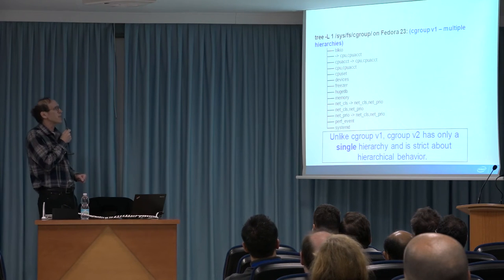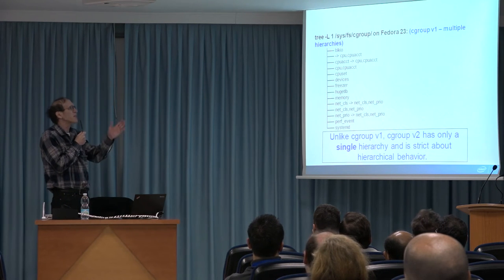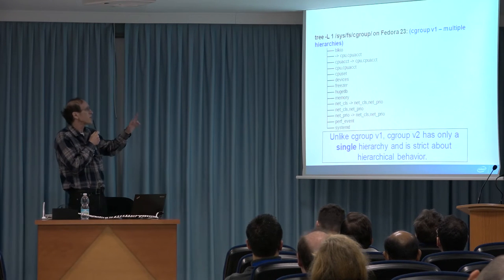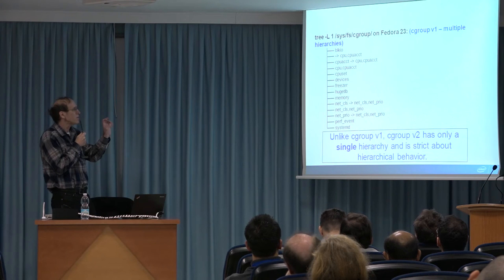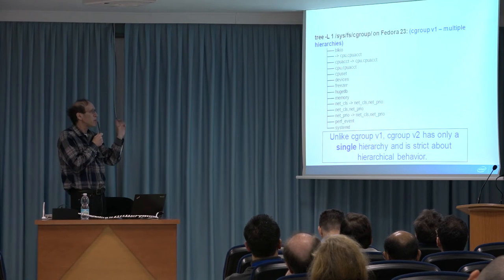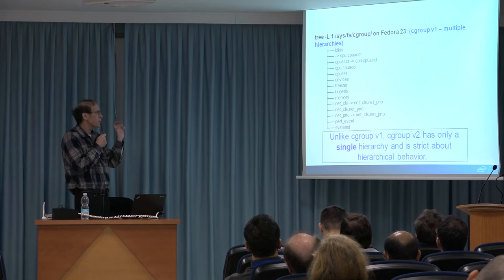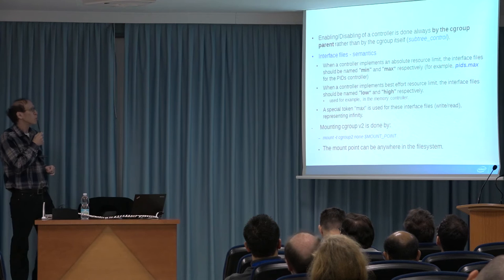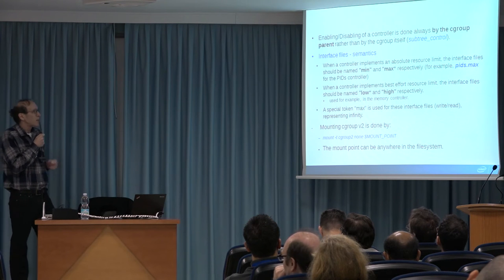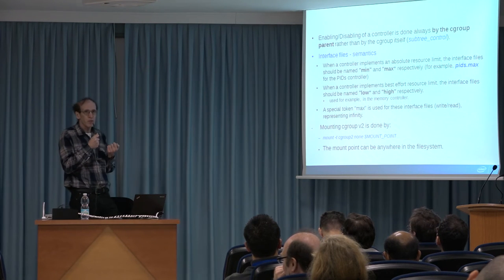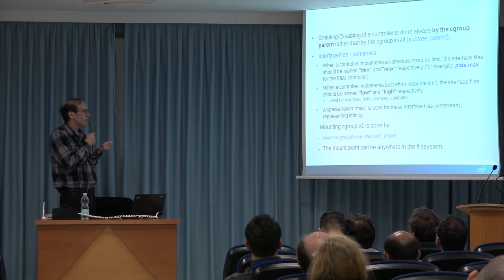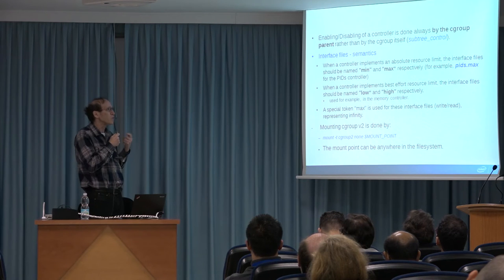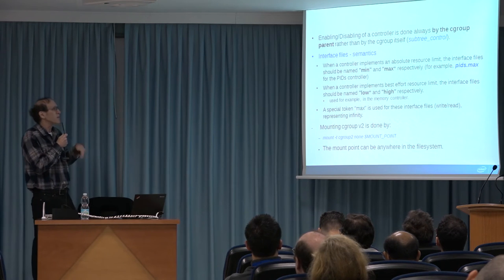For example, in Fedora 23, the Cgroup controllers used are Cgroup V1, and we can see that apart from two cases, every controller is mounted separately on a different path. Again, in Cgroup V2 we have only one root object. The Cgroup V2 enforces strict rules about semantics of interface files, semantics of hierarchy, resource limiting, and so on.